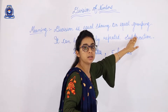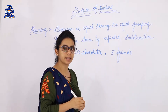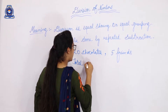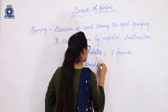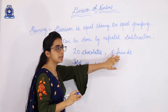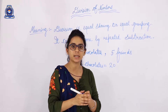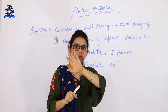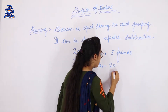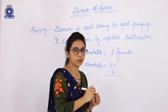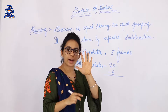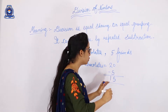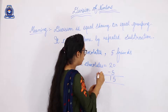We will do this by repeated subtraction. Total chocolates we have are 20, and we have 5 friends. When we do equal sharing, we give one chocolate to each friend. So 5 chocolates are gone. First time: 20 minus 5 equals 15. We distributed one chocolate to each of the 5 friends, so 5 chocolates are used, and 15 remain.